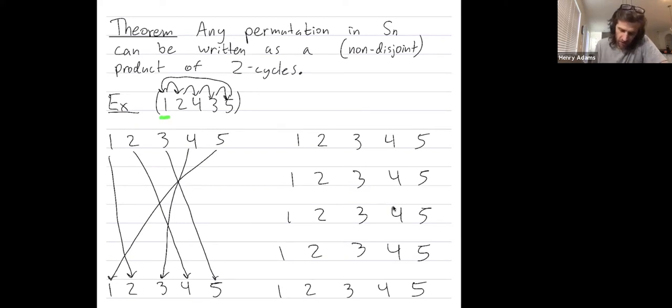I want to send 1 to its final location, which is 2. So my first transposition is going to swap 1 and 2. I want to send 1 to 2, and then 1 is never going to move again. 3, 4, and 5 stay put. That is a two-cycle, a transposition.